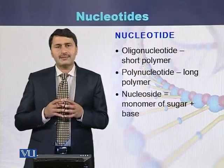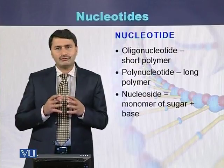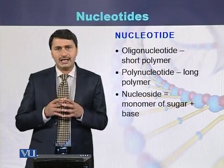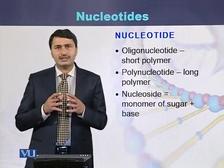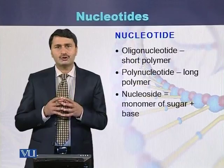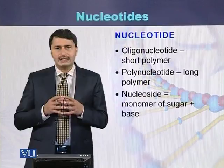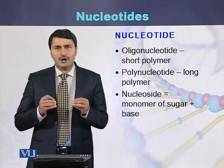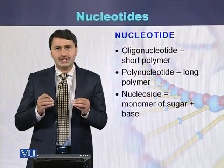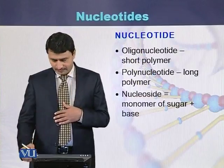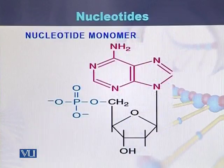There are two types of nucleotides: one is called an oligonucleotide and the second is called a polynucleotide. A polynucleotide is a long chain of nucleotides joined with each other. On the other hand, a nucleoside is the combination of a sugar and a base.